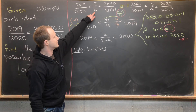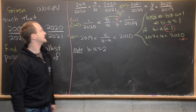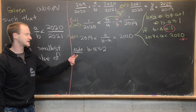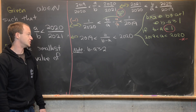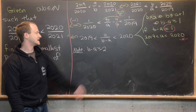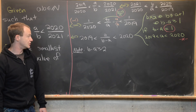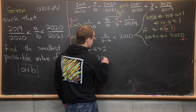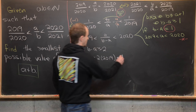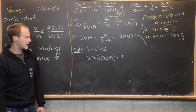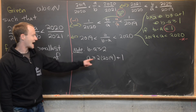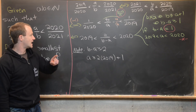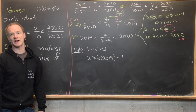Since b − a ≥ 1 and b − a = 1 is impossible, we conclude b − a ≥ 2. Now, since a/(b − a) > 2019 and b − a ≥ 2, we need a > 2 × 2019, so a ≥ 2 × 2019 + 1. We add the one because we need a strict inequality — we cannot be equal to 2019.